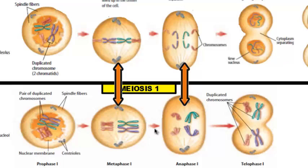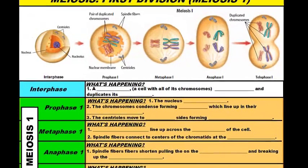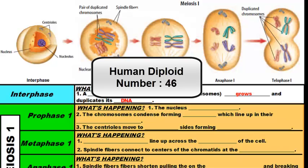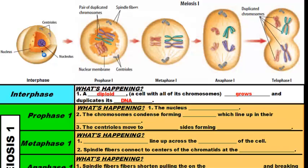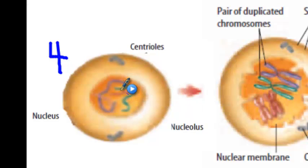Let's talk about how meiosis makes sex cells. Meiosis starts with the first division — meiosis I — beginning with interphase, just like in mitosis, where the cell grows and duplicates its DNA. The cell we start with is called a diploid cell, a cell with all of its chromosomes. Humans have 46 chromosomes in their body cells, so the diploid number is 46. In this example, the cell's diploid number is 4 — a green, a red, a purple, and a pink chromosome.